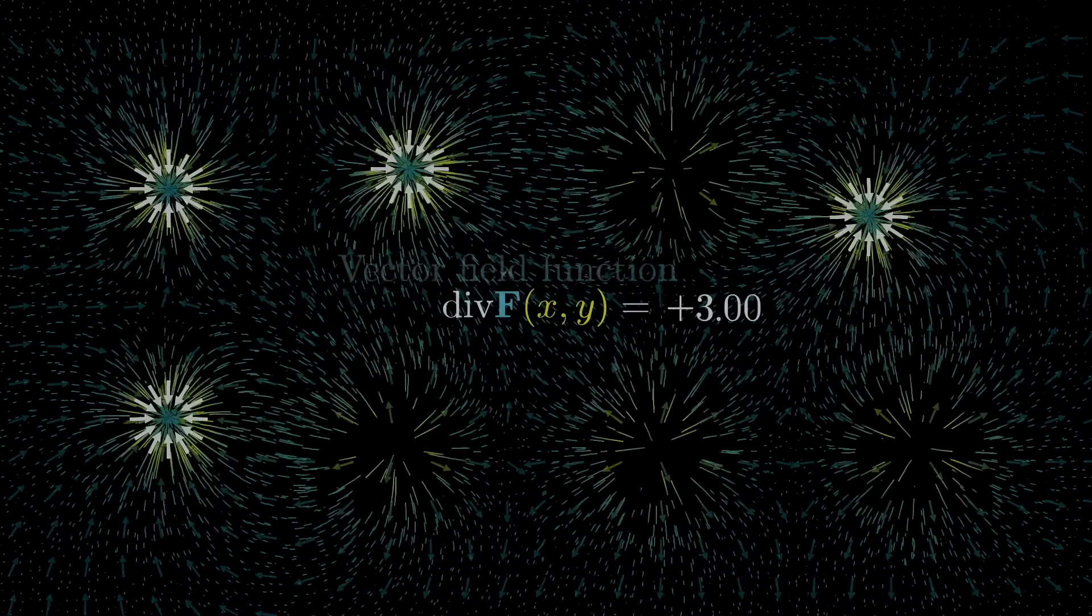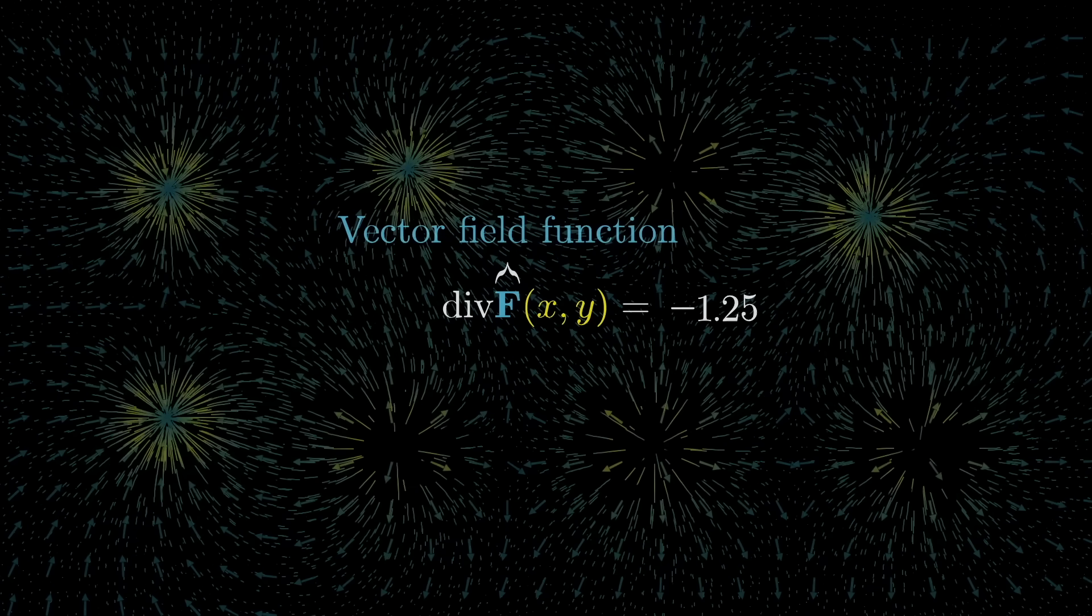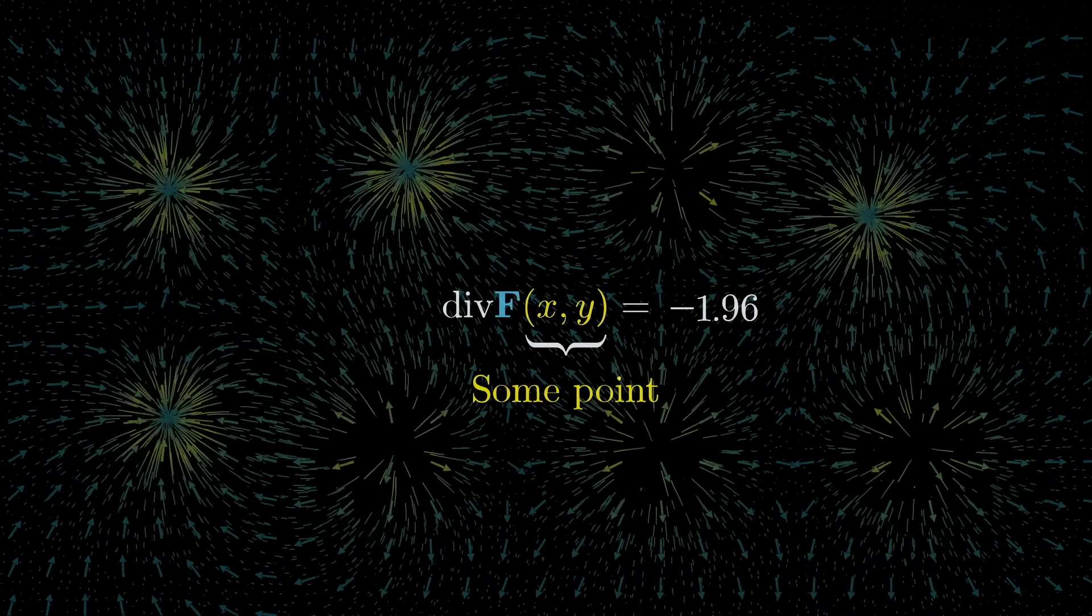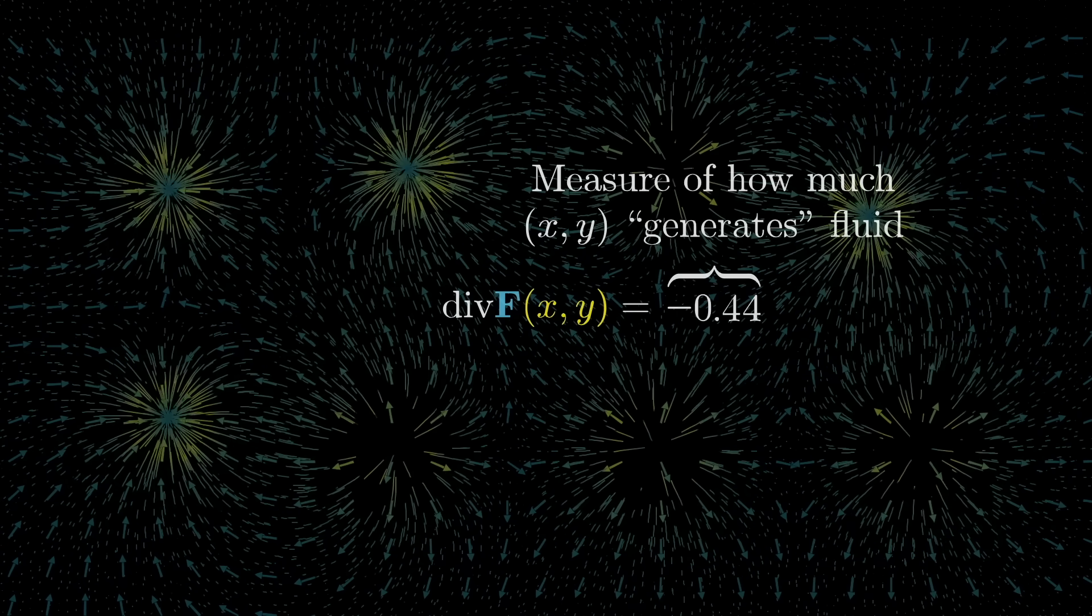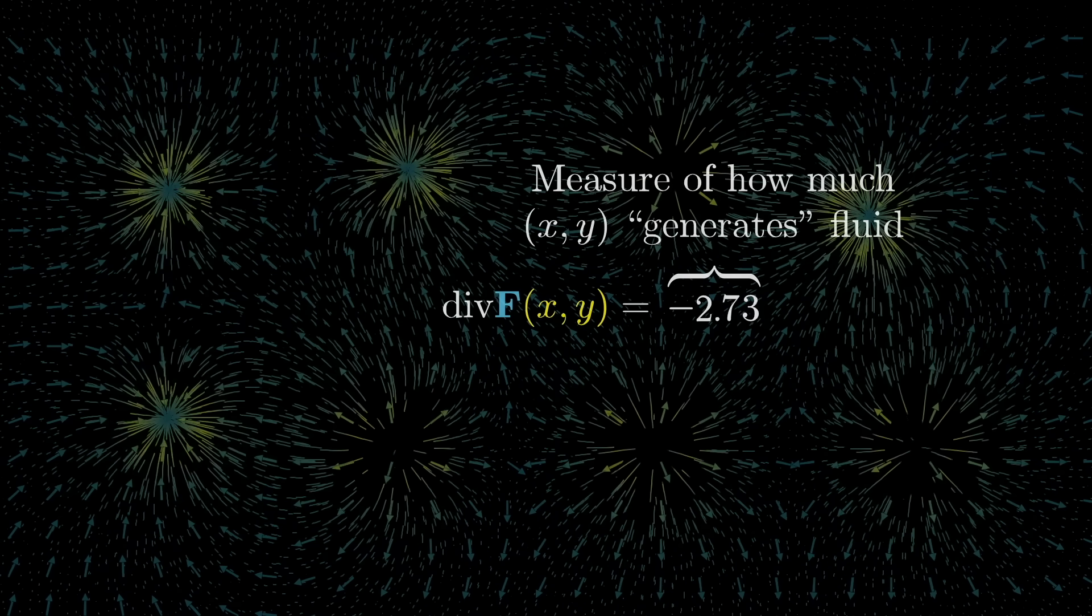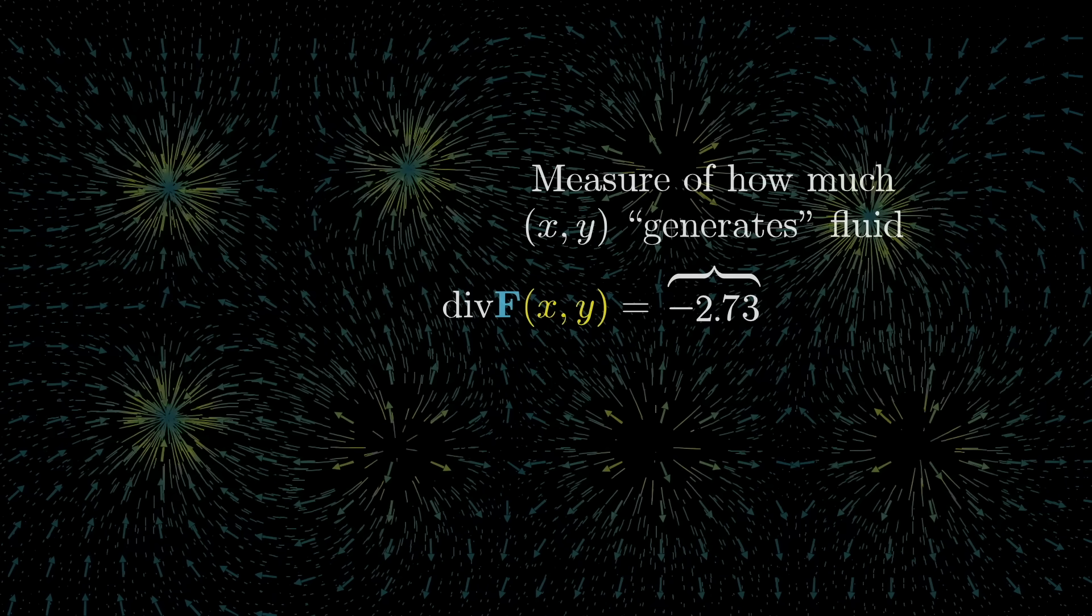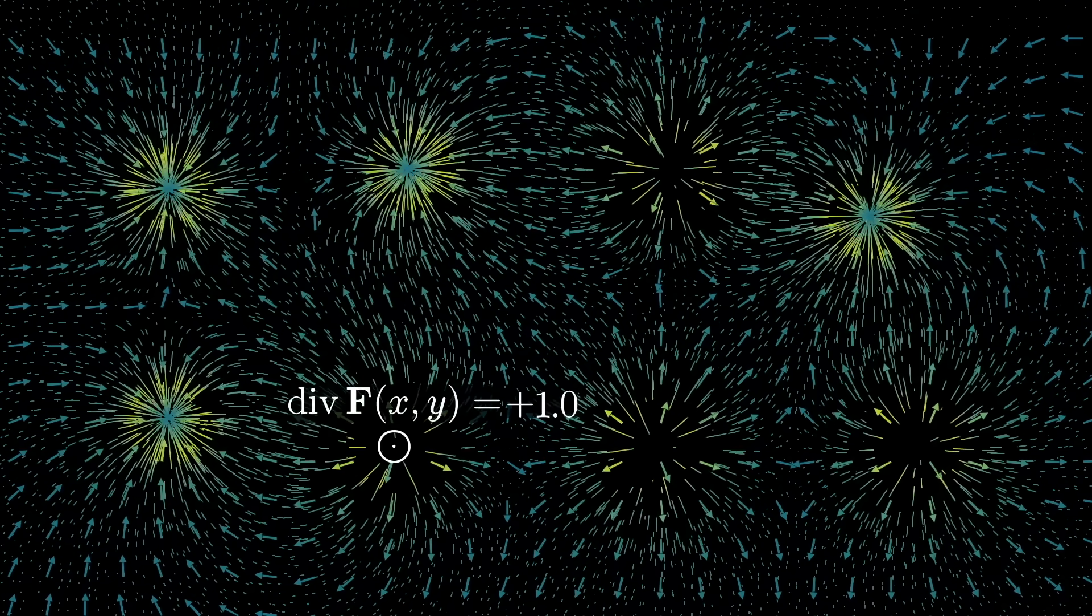The divergence of a vector field at a particular point of the plane tells you how much this imagined fluid tends to flow out of or into small regions near it. For example, the divergence of our vector field evaluated at all of those points that act like sources will give a positive number.